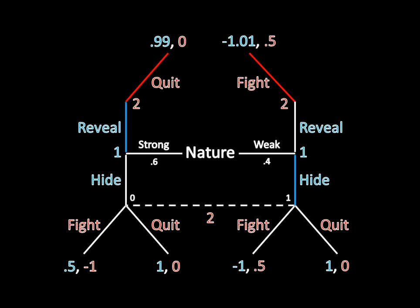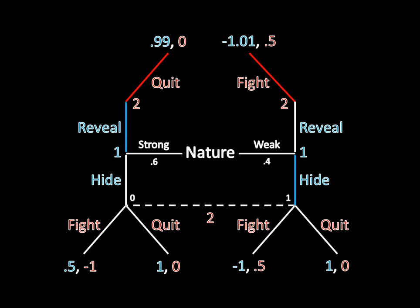So the posterior belief that Player 2 has about Player 1's type is that with probability 1, given these separating strategies, Player 1 is weak. Now, perfect Bayesian equilibrium also tells us what needs to be the case about the strategies that players play — specifically, the strategies need to be sequentially rational, given the player's beliefs.